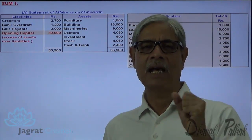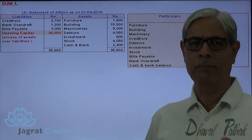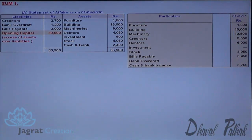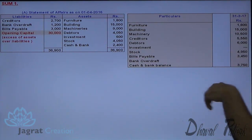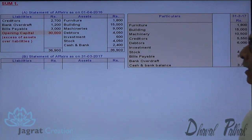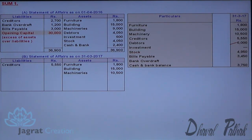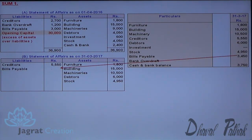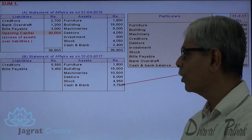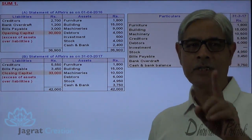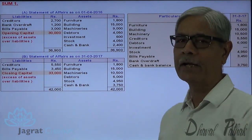After finding out this capital, I will let the trader continue doing business in his usual manner. At the end of the year, I will go to him and ask the same details. He provides the information for the end of the accounting period, and on that basis I prepare a closing statement of affairs. Furniture 1,800, building on the asset side, machinery on the asset side, then creditors on the liability side, debtors on the asset side, investment not there, stock on the asset side, bills payable on the liability side, and cash and bank balance. From the total of assets I deduct liabilities to find the closing capital. His capital at the beginning of the year was 30,000 and the capital at the end of the accounting period is 33,000.